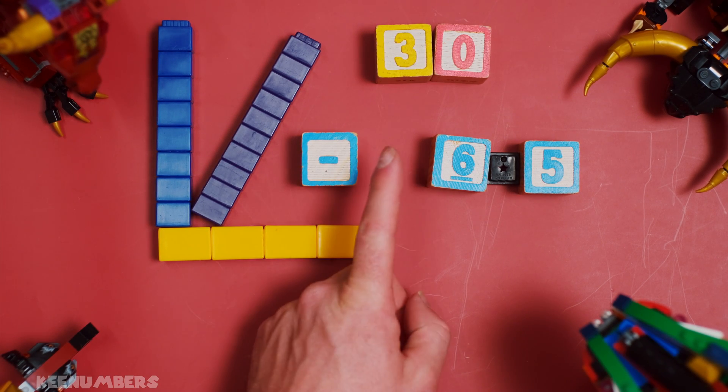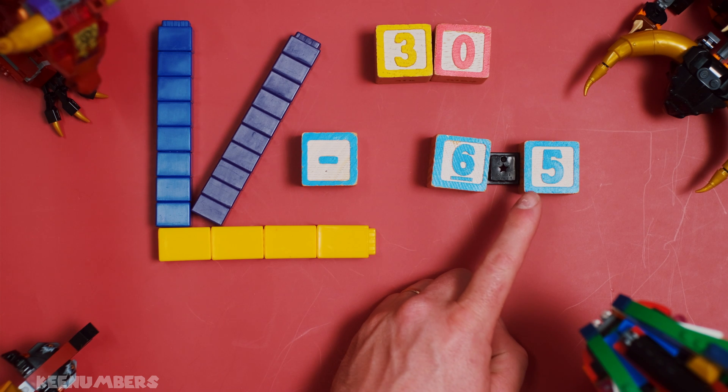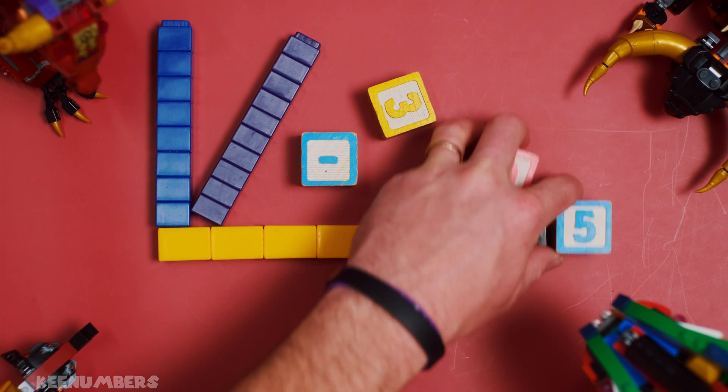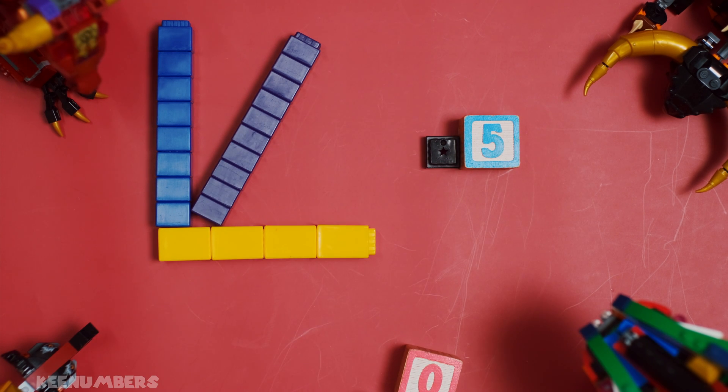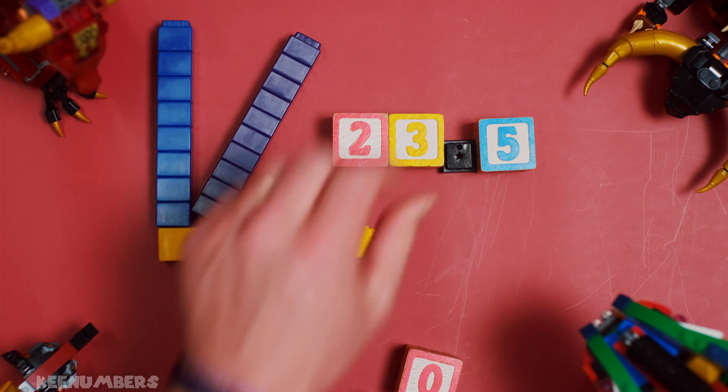Well, 30 minus six is 24, but then you're also subtracting a half. So rewind, pause, fast forward as you need to. We're looking for simply 23 and a half degrees.